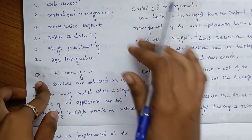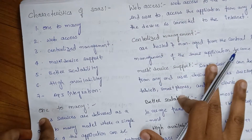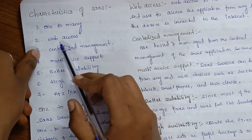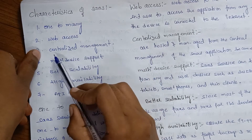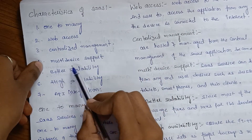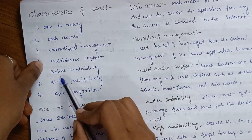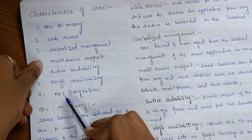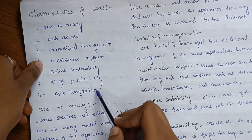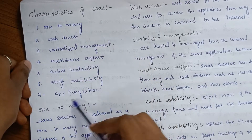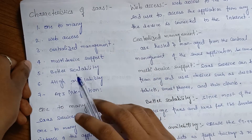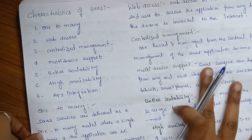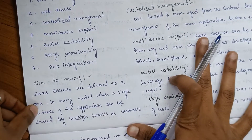The seven characteristics of Software as a Service are: one-to-many, web access, centralized management, multi-device support, better scalability, high availability, and API integration. Now let's see each one by one.